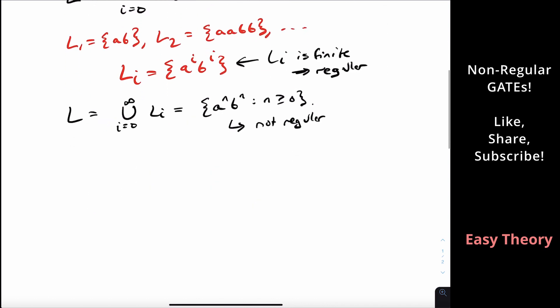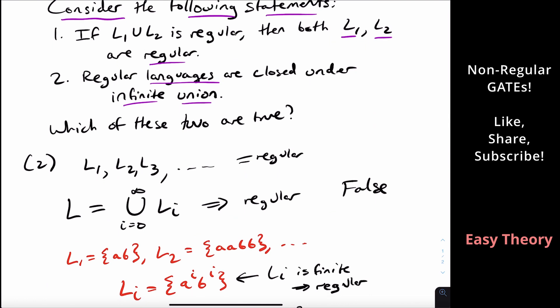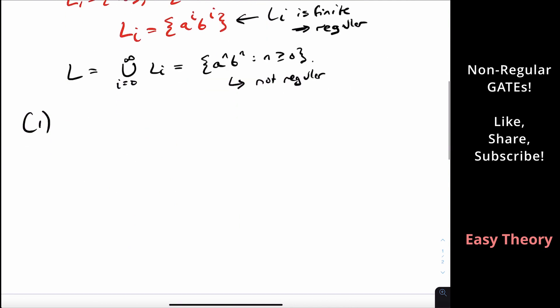So then let's talk about one. One says that if we have two languages that are non-regular, then both of them are regular. We did a video about this, actually, about the closure properties of non-regular languages.